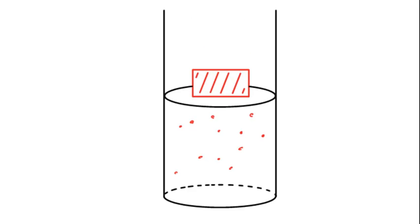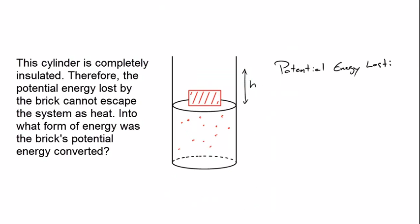and my rhetorical question for you is where did the potential energy of that brick go? It dropped down a certain distance, and where did that potential energy of the brick go? The potential energy lost by the brick is equal to the mass of the brick times g times the height that it fell. And I'm curious, where did this energy, into what form did it go?